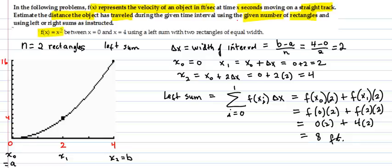So here's the function that they gave us for this particular one: f of x equals x squared, between x equals zero and x equals four. That's the interval using left sum with two rectangles of equal width.